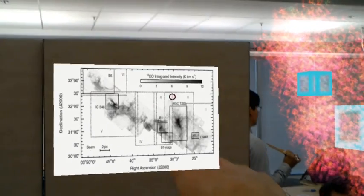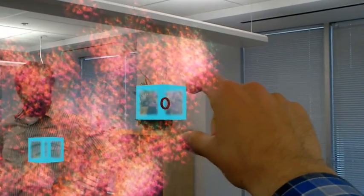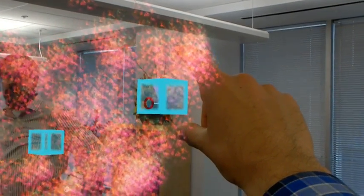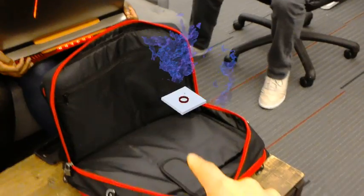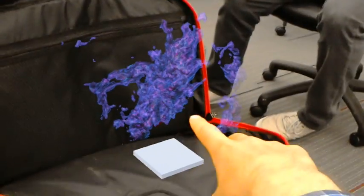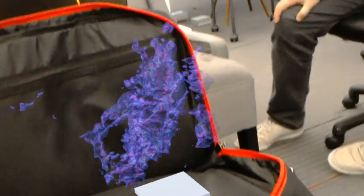If we select this, we can view the spectral data right in front of us. You can see right here the different points of the NGC 1333 cloud.